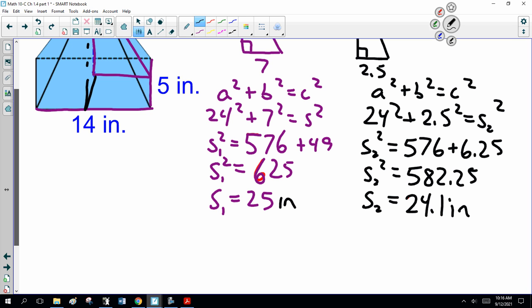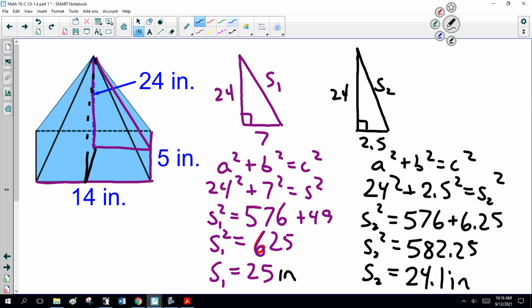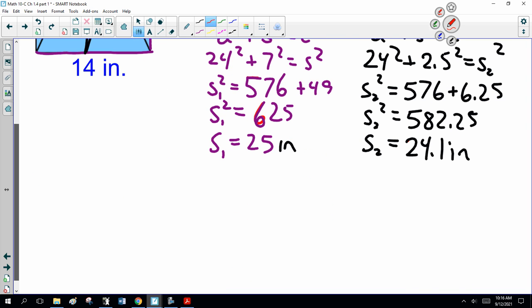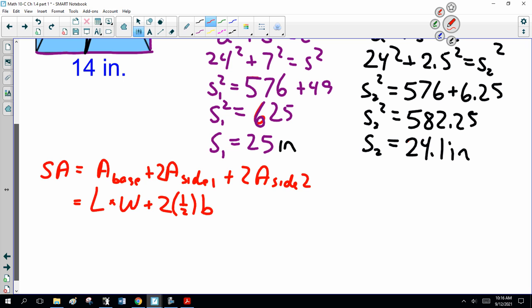So, now we have to find the total surface area. Area base plus two times area side one plus two times one half base two height two. Now, should I put those in brackets? I'll put them in brackets.